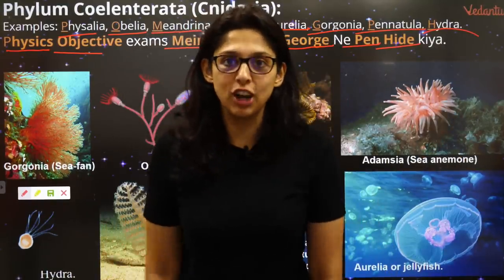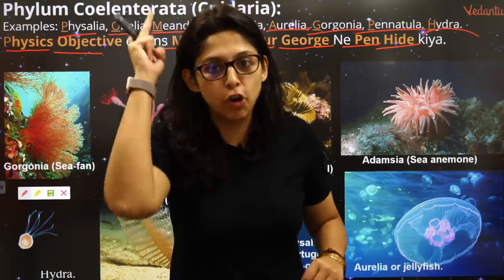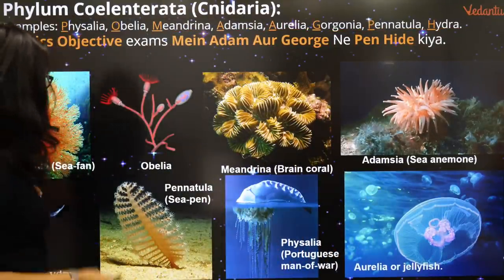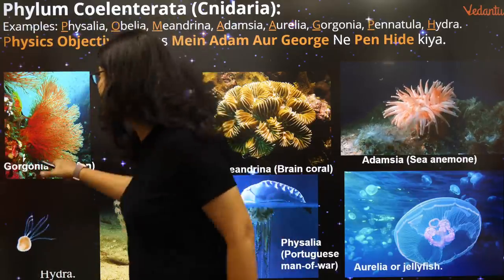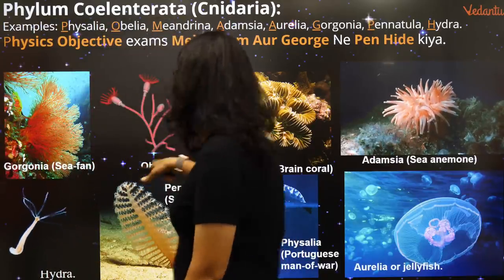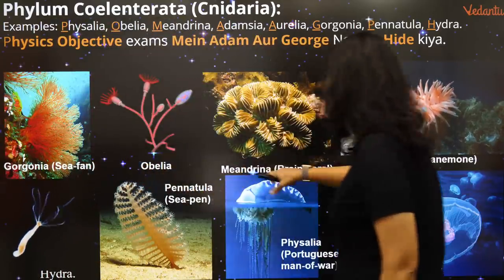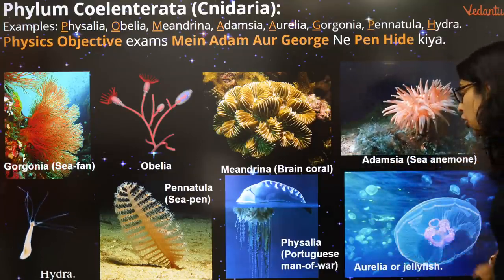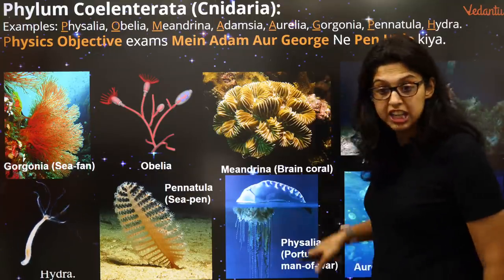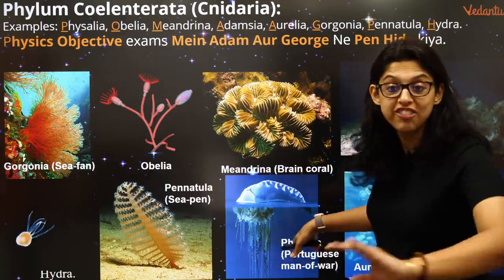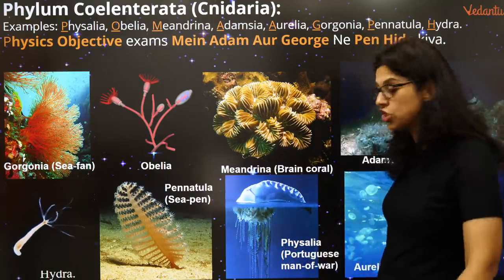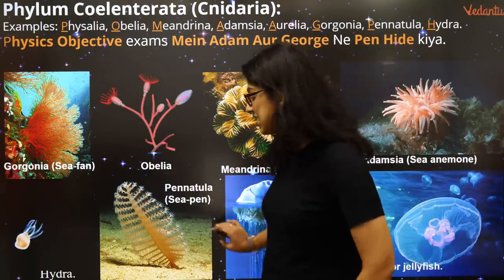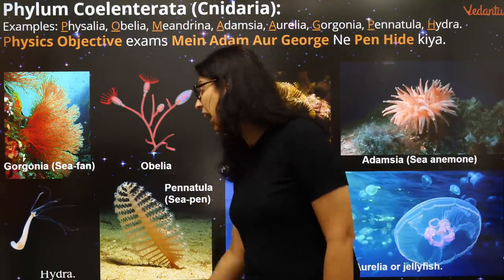Please like, share and subscribe to our channel! Gorgonia is also known as sea fan — MCQ question. Obelia, Meandrina = brain coral, Adamsia = sea anemone, Aurelia = jellyfish, Physalia = Portuguese Man of War — very very important! Pennatula = sea pen, and there you have Hydra.